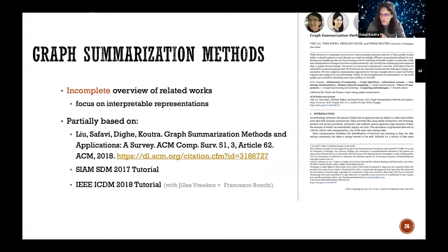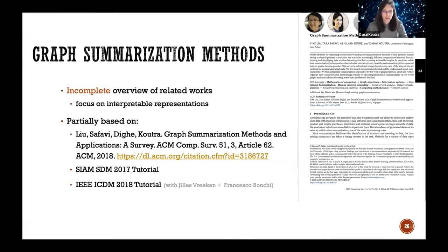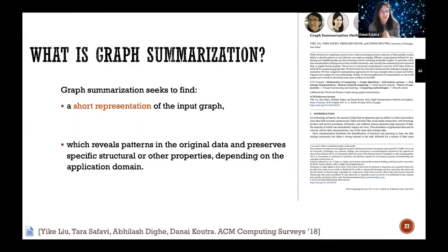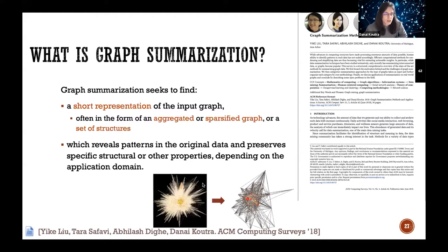This is a very incomplete overview of related work in this space, and I'll be focusing mostly on interpretable representations. The content is partially based on a survey I wrote with students published in ACM Computing Surveys, as well as two tutorials. Graph summarization seeks to find a short representation of the input graph such that it reveals some patterns and potentially preserves structural or other properties. What is preserved really depends on the application.